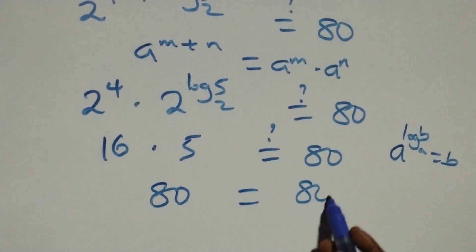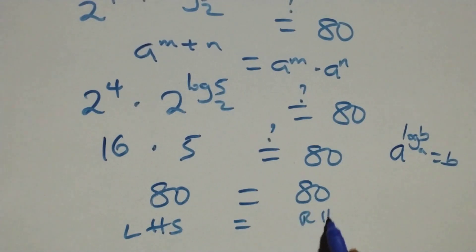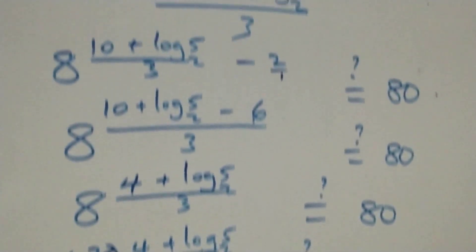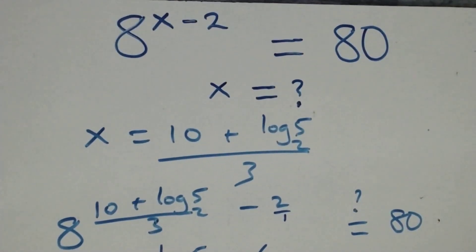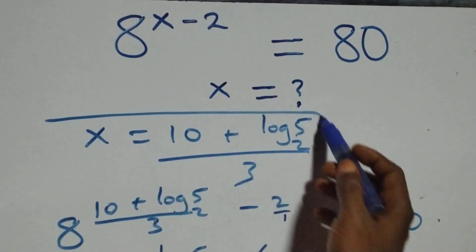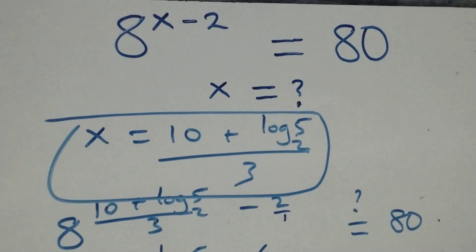Left-hand side equals the right-hand side. Therefore we conclude that x equals (10 plus log₂5) over 3 satisfies the given problem. Thank you for watching — don't forget to subscribe for more videos, turn the notification bell on, share this video, give a thumbs up, and put your comment. See you next class, bye for now.